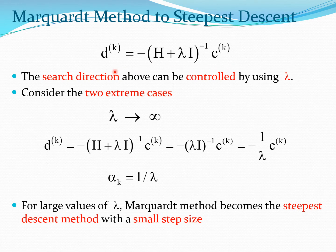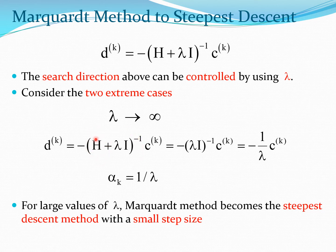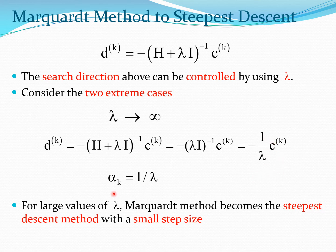Looking at the Marquardt search direction, we can see that it can be controlled by the parameter lambda. Consider two extreme cases. If lambda is very large, dk is such that the Hessian matrix term becomes very small and the lambda*I term dominates. You then get minus 1/lambda times ck. Comparing this with the steepest descent method, this is essentially the steepest descent method with step size 1/lambda, so alpha_k is 1/lambda.